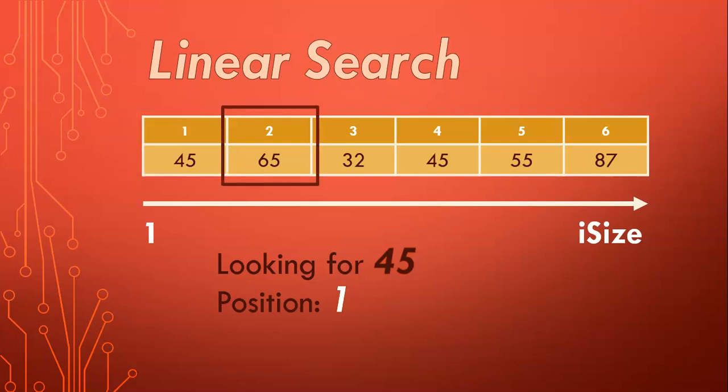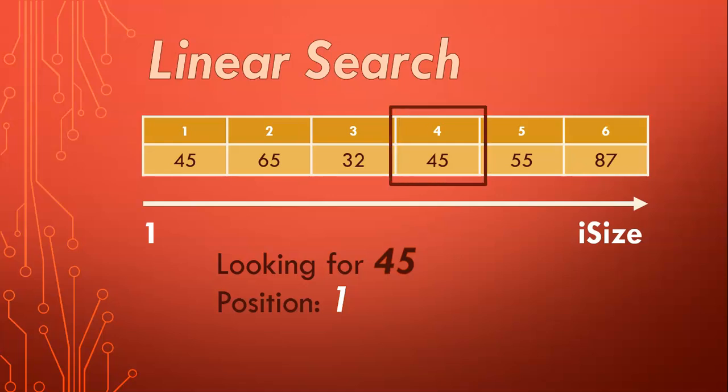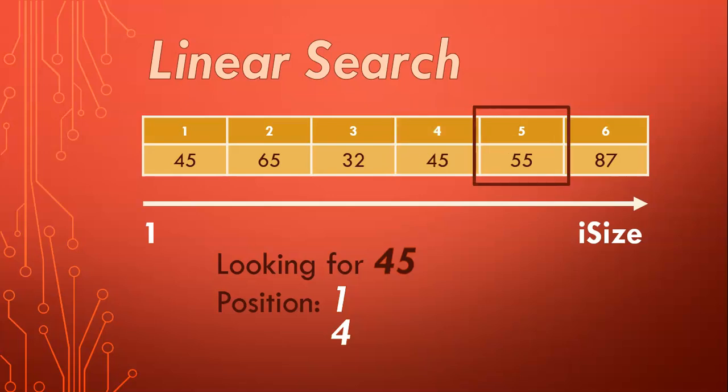So we go to the next value — nope, that's not a 45. Third value, that's not a 45. Go to the fourth value — that's a match. So then we record its position at position four. We've got two occurrences of the 45, and we carry on looking. Nope, that's not a 45. The last value — nope, that's not a 45. And now we've reached the end of the array. So that's basically a linear search using some sort of for loop.